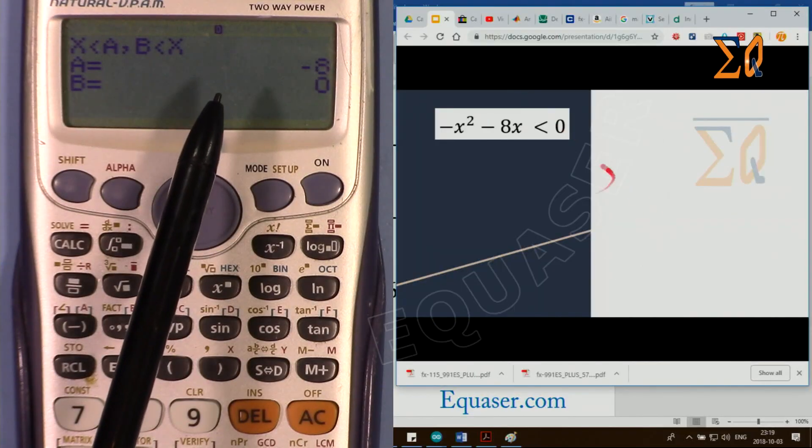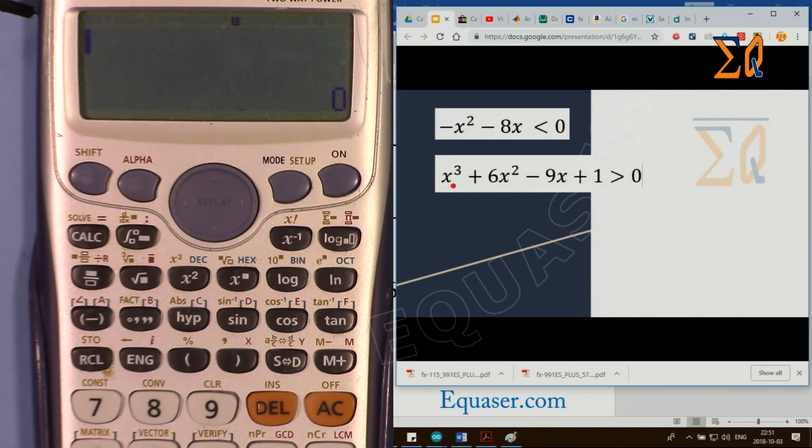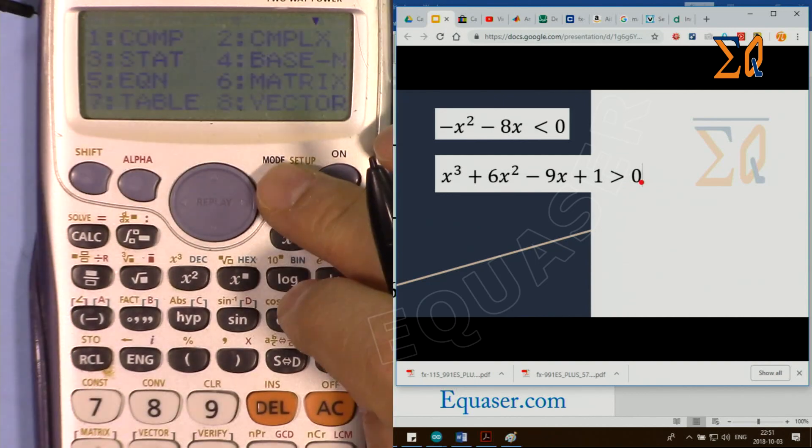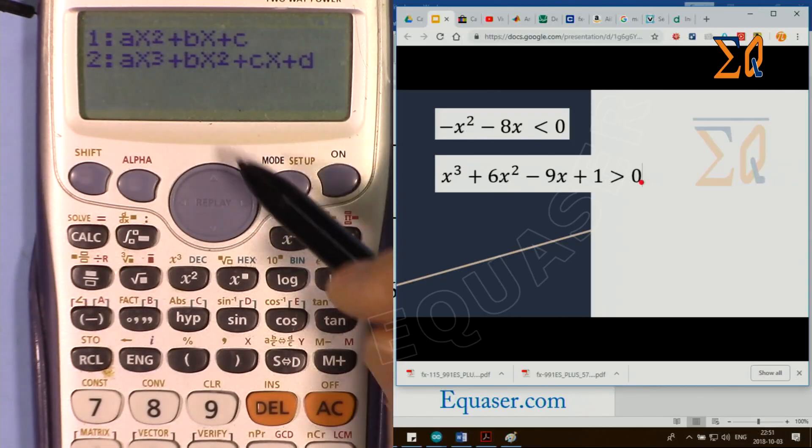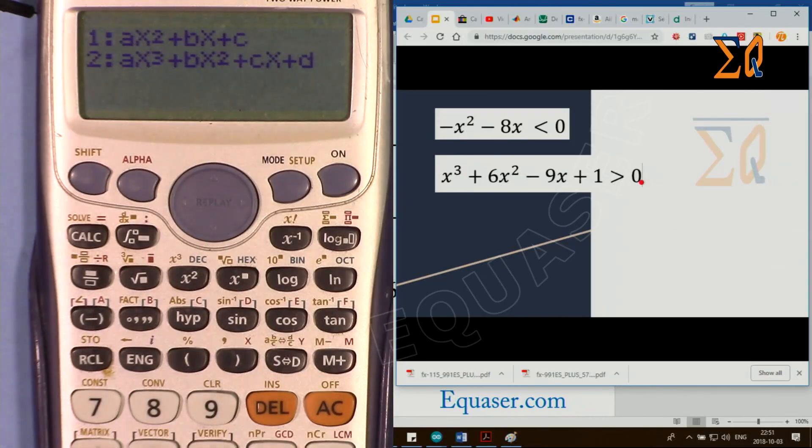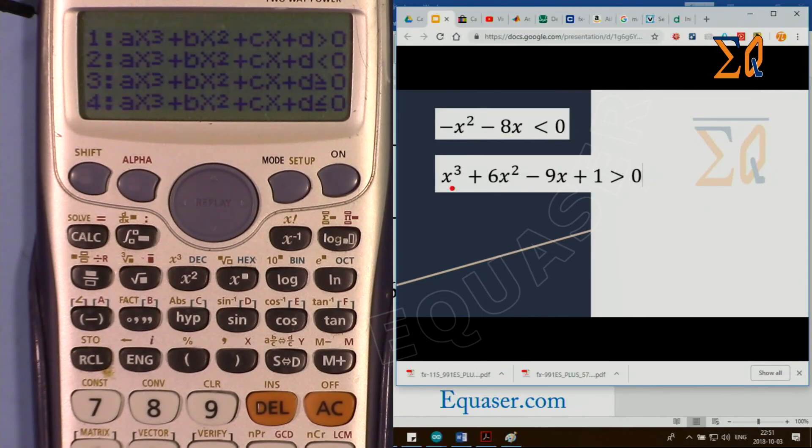Now this is a third degree: x³ + 6x² − 9x + 1. This time we want to see at what value of x is y bigger than 0. Press mode again, go down and press 1 for inequality. Then this time, because our equation is cubed, third degree, press 2. Now we are looking for bigger than 0, the first one.